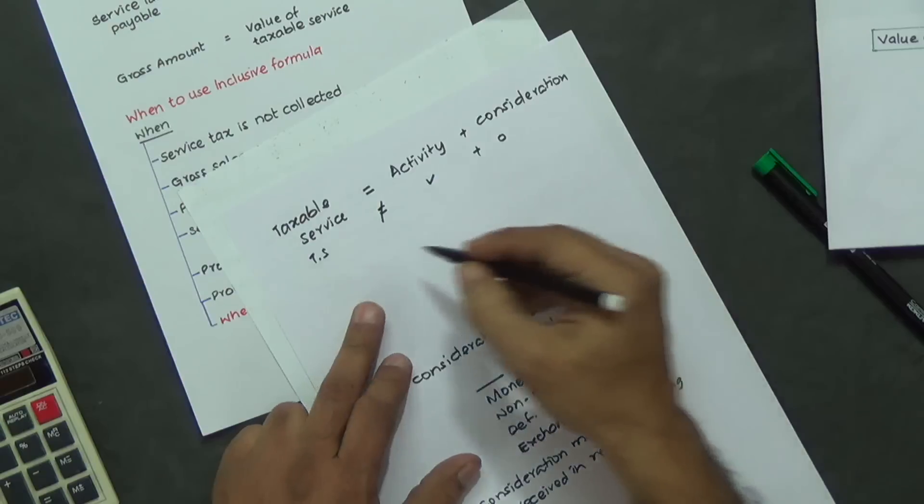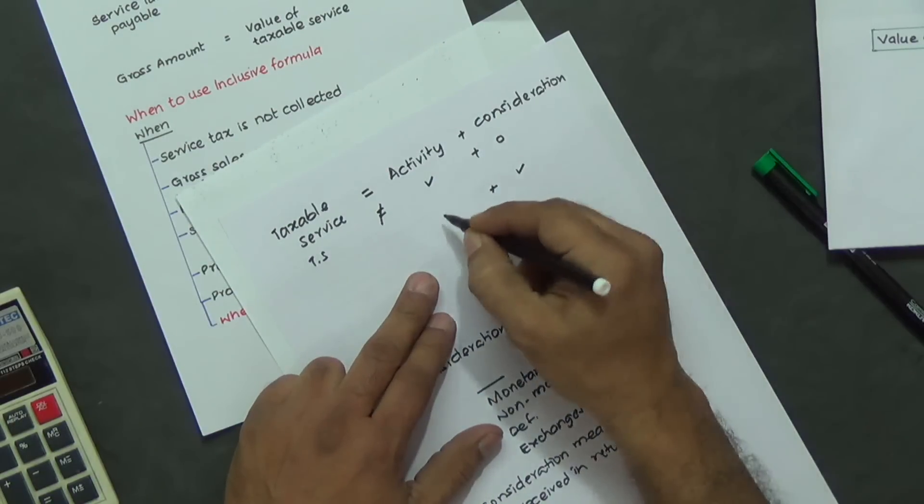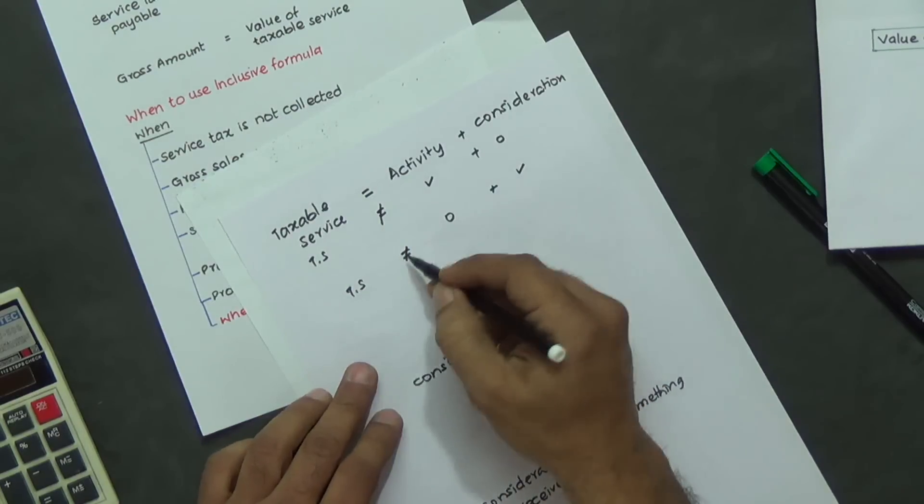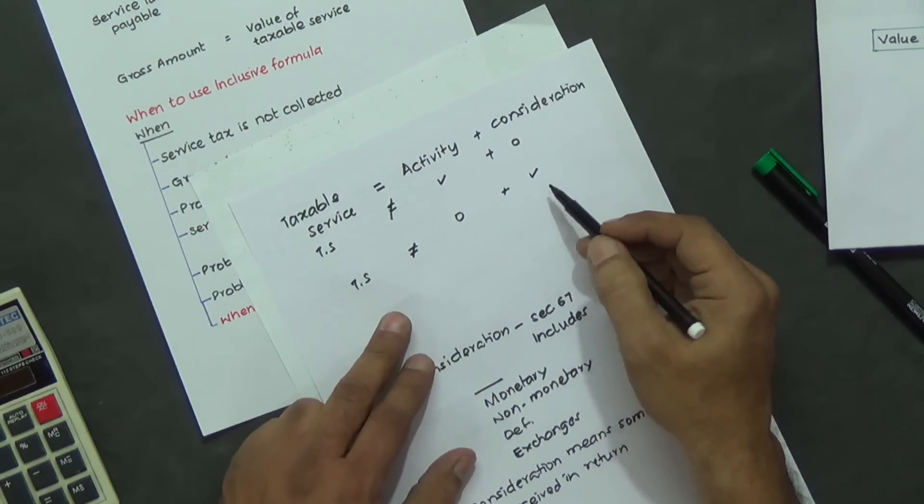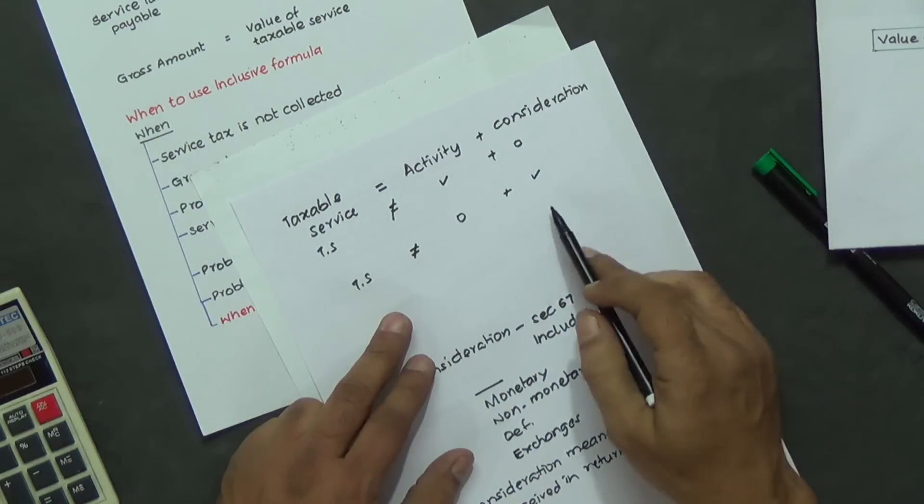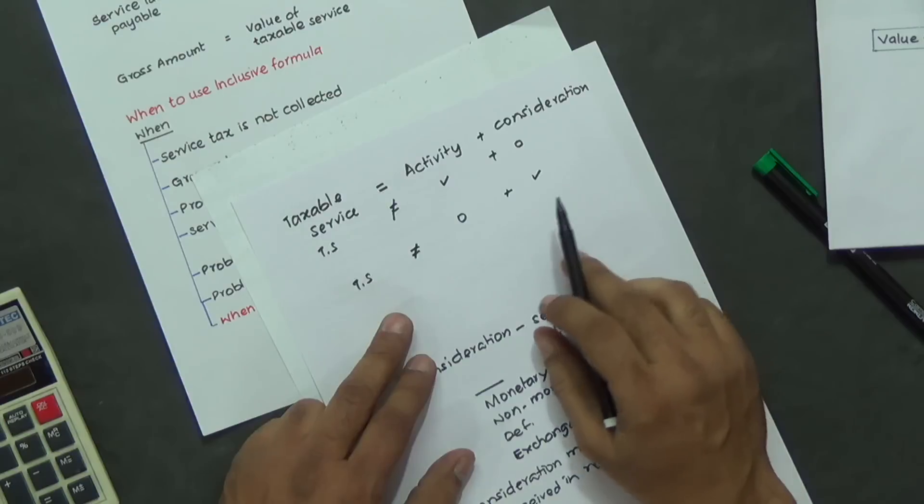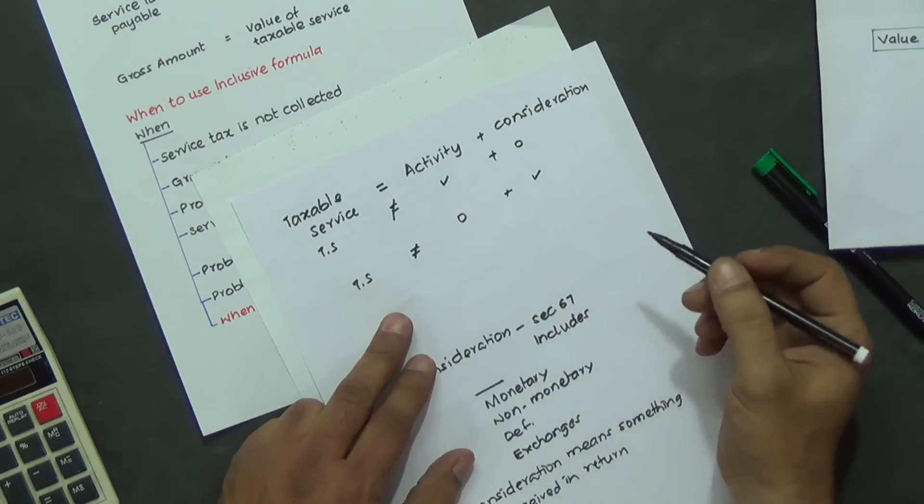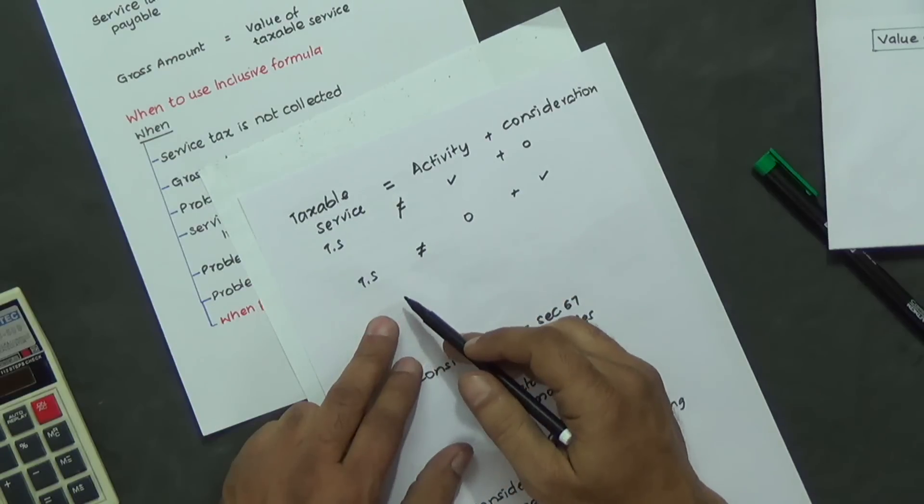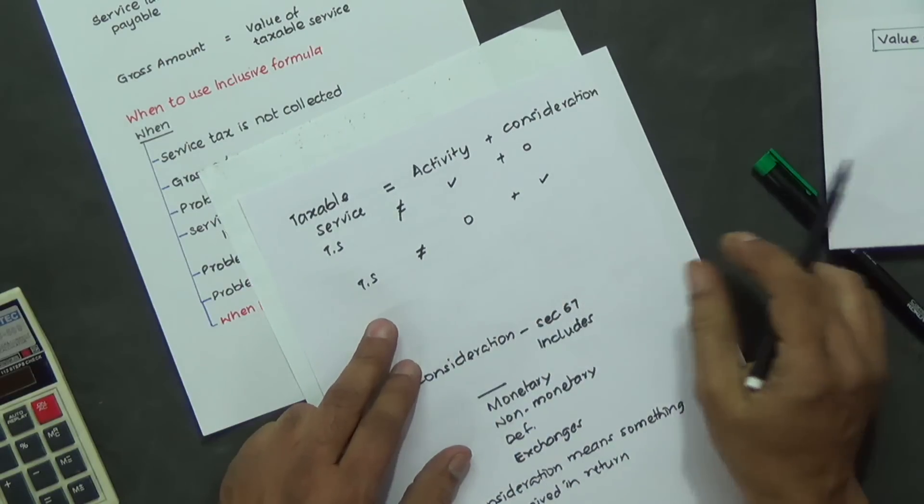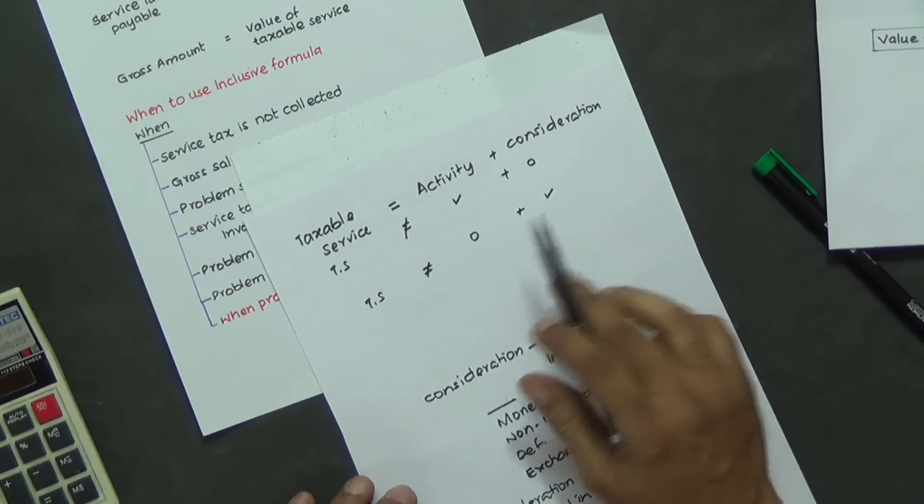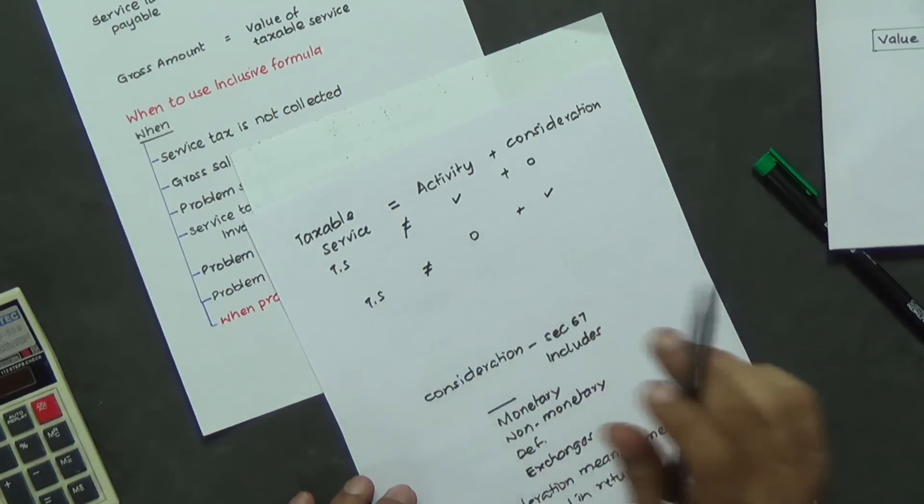Let us take another case where only consideration, no activity, again, will not result in taxable service. I'll give an example for only consideration. Bill Gates says, okay, I'll give you one crore rupees, Bangalore University students, all of them to be passed without giving their exams. So it's just giving a consideration, no activity received in return, then it's not a taxable service. Only if both of them are present, it will result in taxable services.